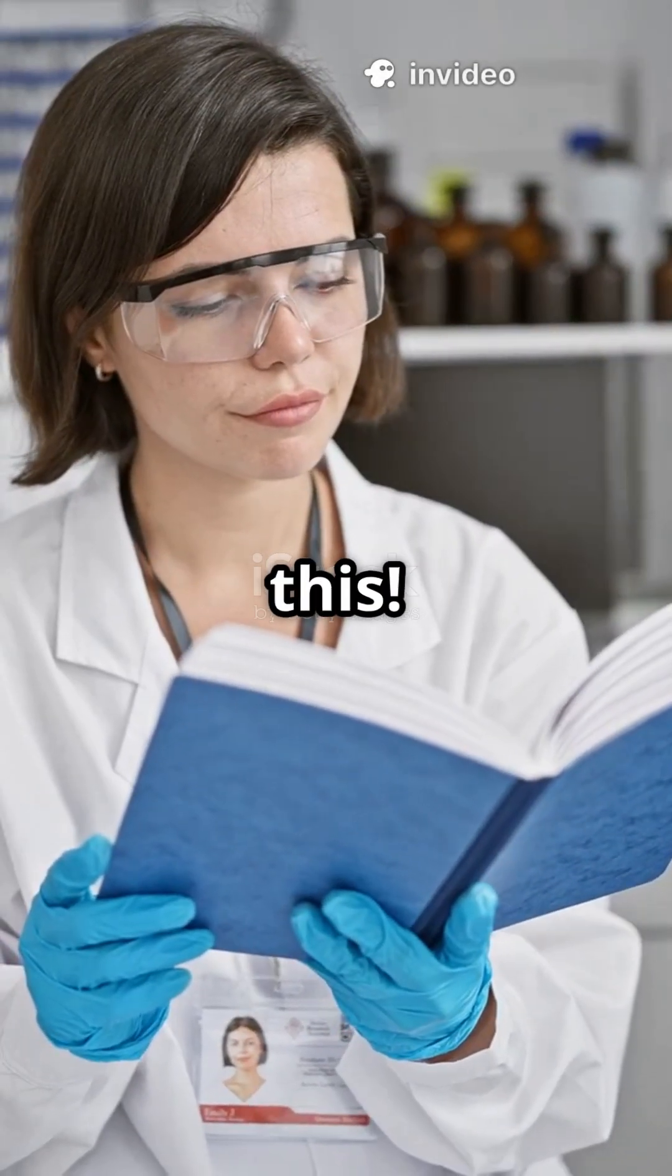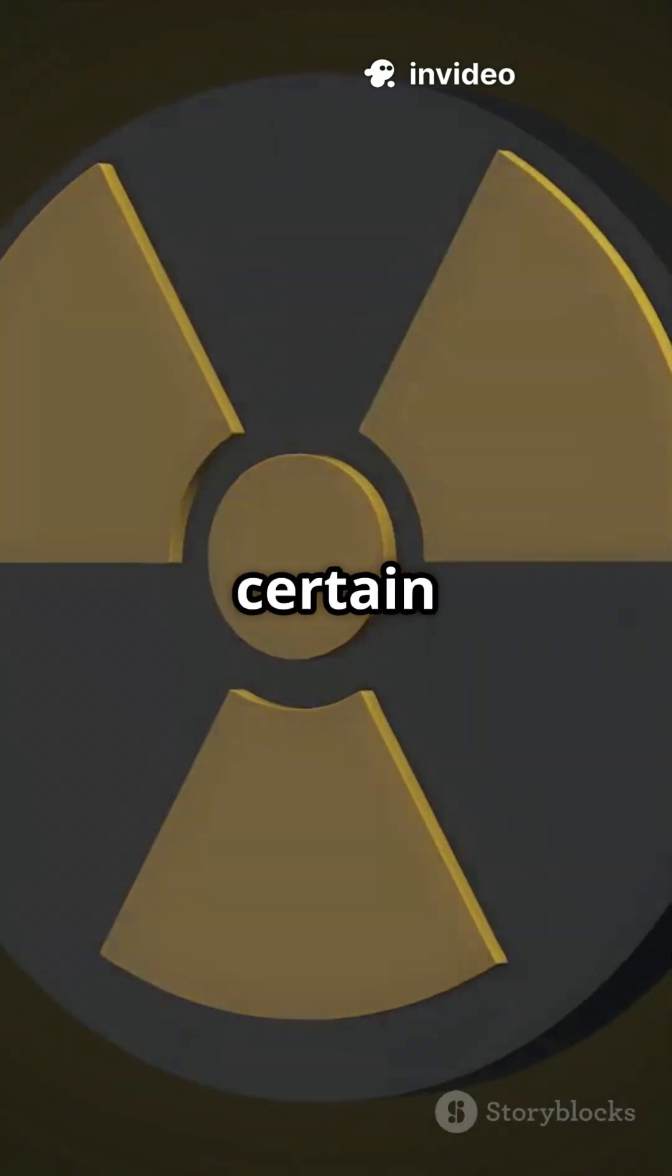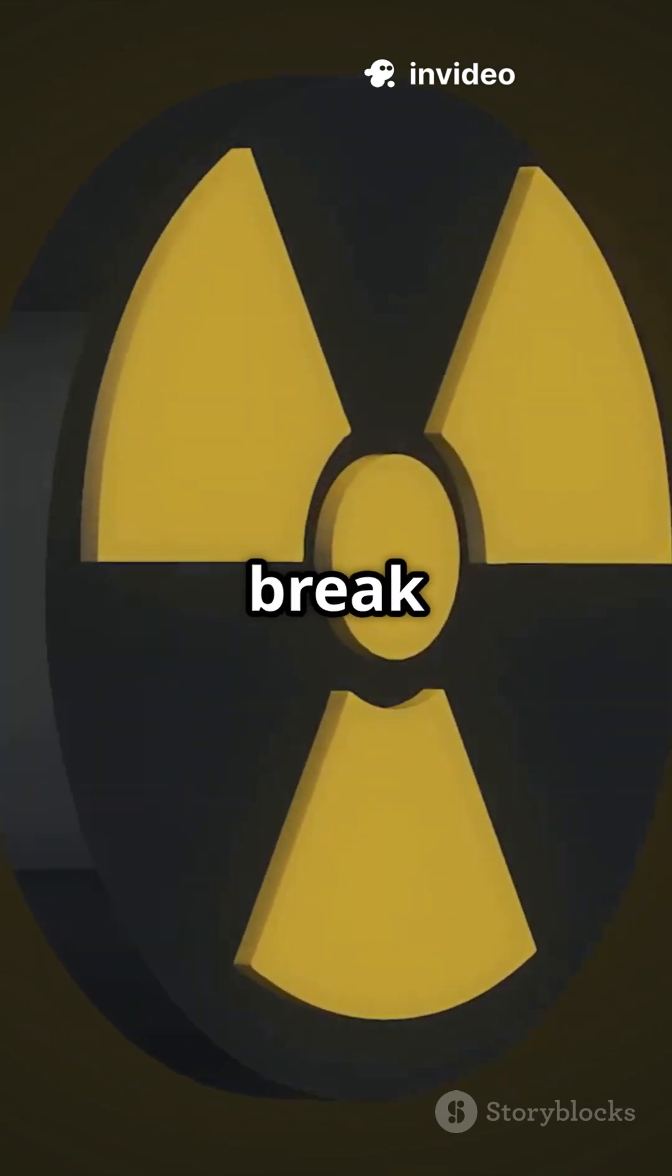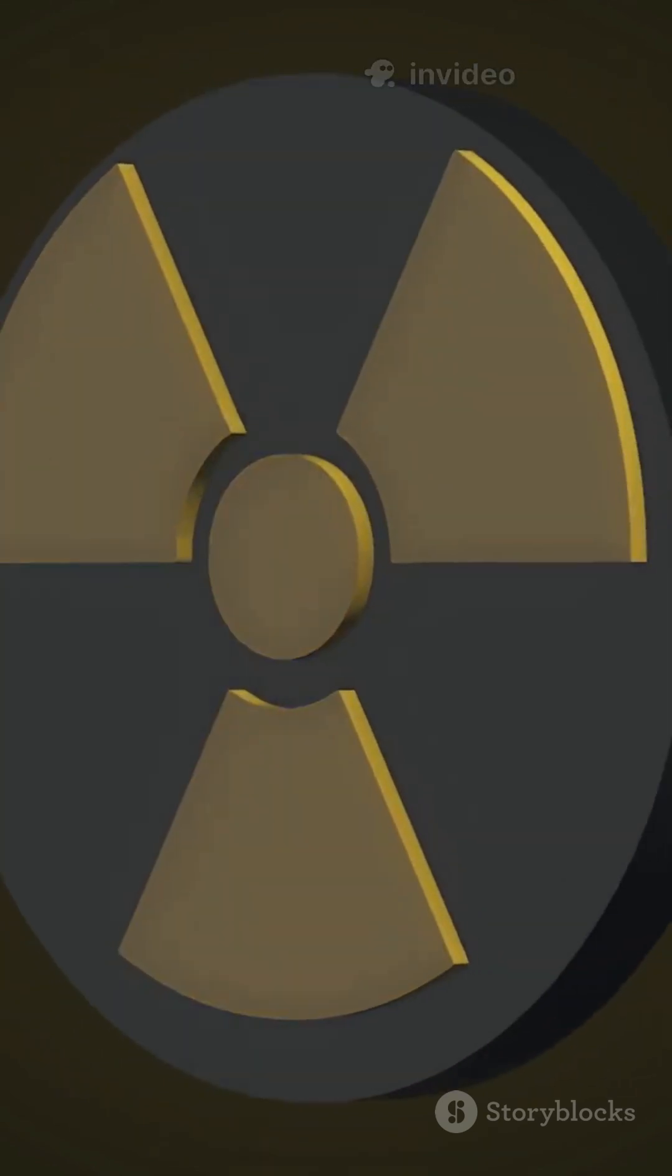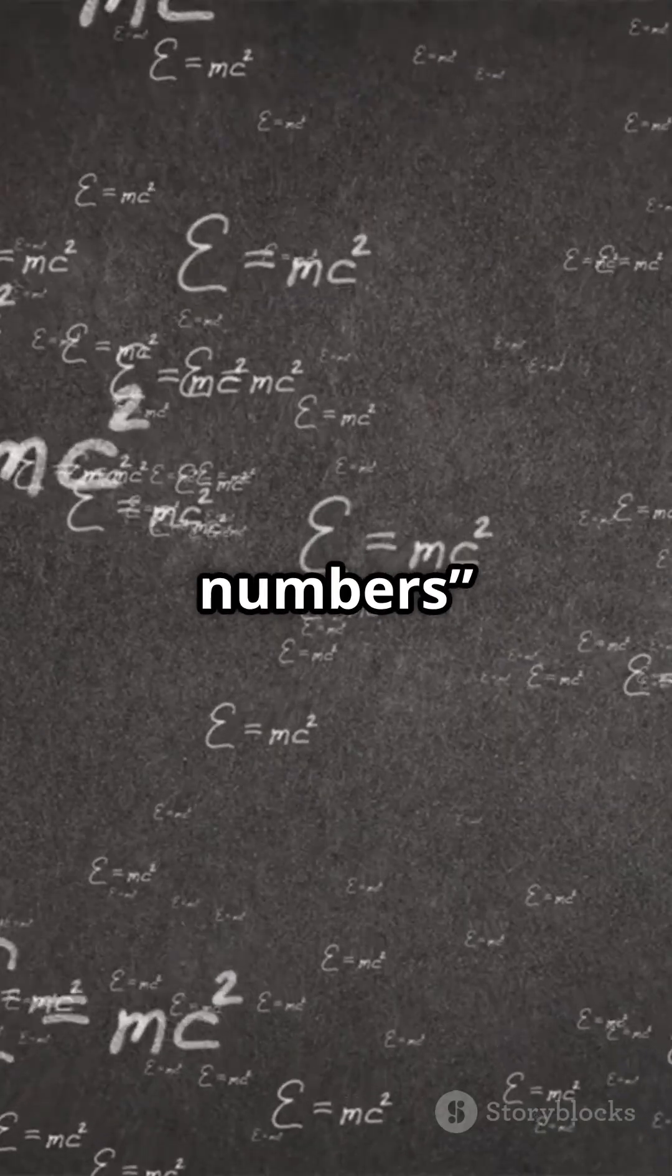If you're a science enthusiast, you'll love this. Why do certain atoms stick around forever while others break apart in seconds? The answer is all about magic numbers in nuclear physics.